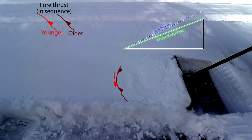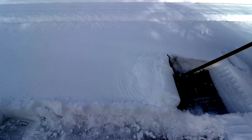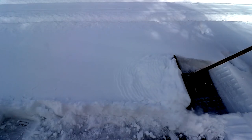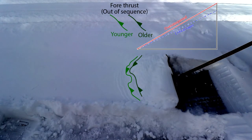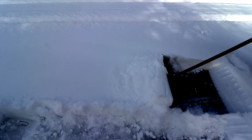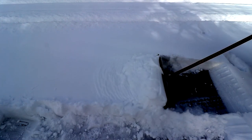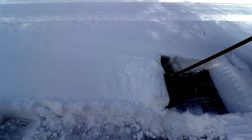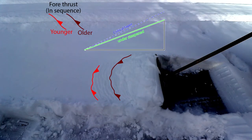The taper of the wedge must be under-steepened compared to the critical taper at this point, based on the deformation observed in the next section. Next, two main out-of-sequence thrusts develop that increase the wedge taper to beyond the critical taper, such that the wedge is now over-steepened. And hopefully by now you can predict that a new package of in-sequence thrusts will develop and result in the wedge taper decreasing, probably to below the critical taper.